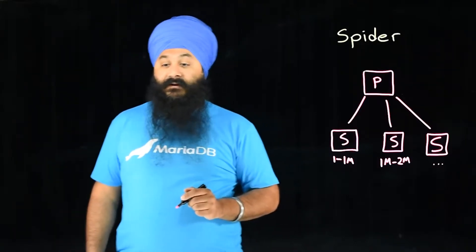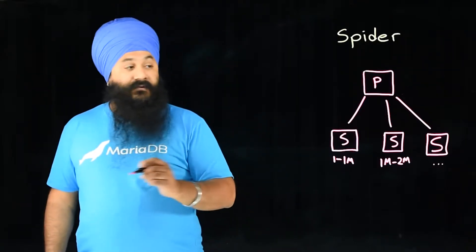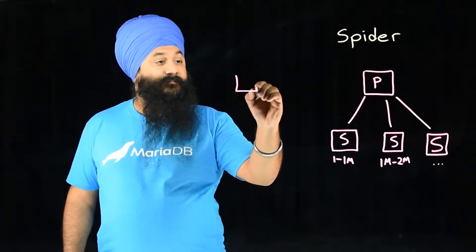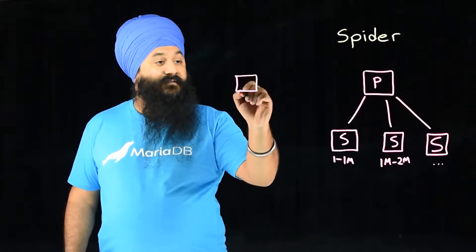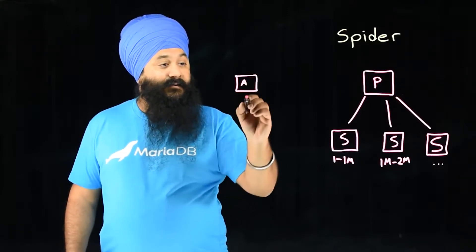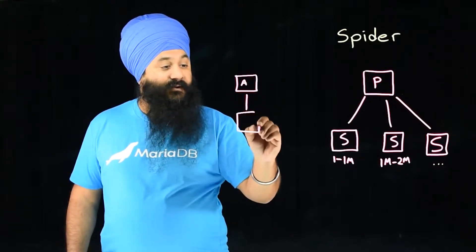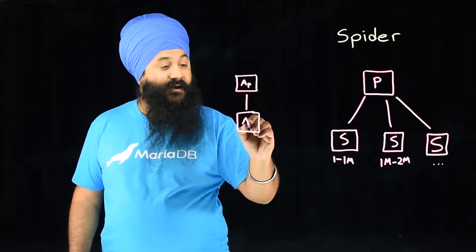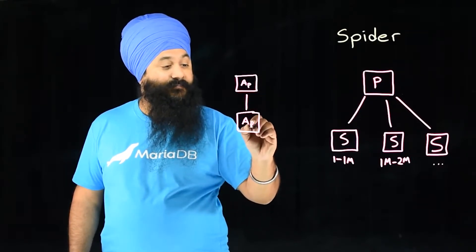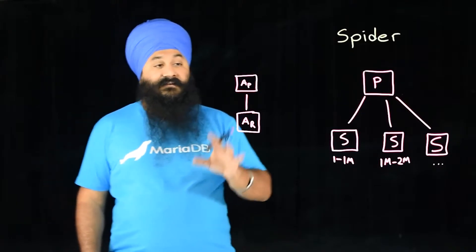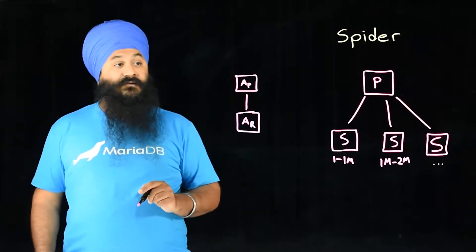Here's another use case for Spyder. I recently had a client that had an auth server. So they had their auth MariaDB — we'll call this A — and it had a normal MariaDB replica. So this is A primary, and this is A replica. They had the auth service sitting there and they needed to access that from a new application.